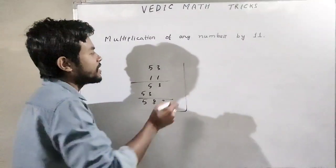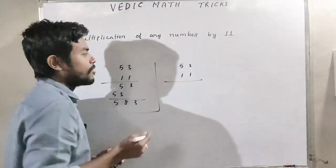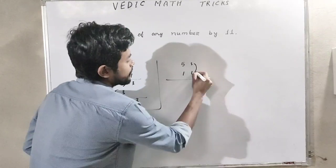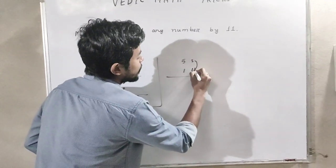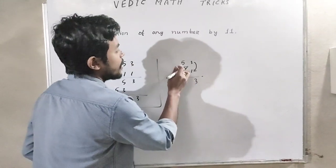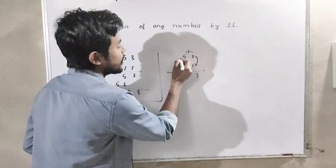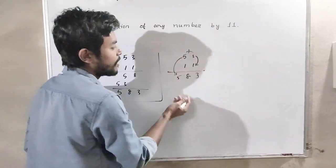But in Vedic mathematics, it can be done easily. So, 3 is placed here, then 3 plus 5 equals 8, and 5 is here. The result is 583.